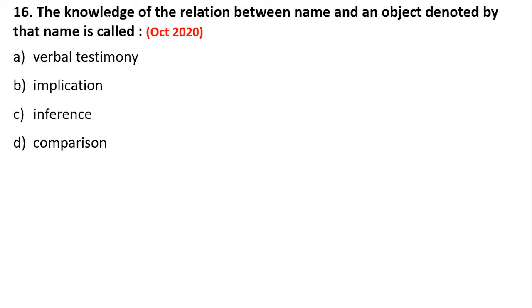The knowledge of the relation between an object name and the object denoted by that name is called verbal testimony, implication, inference, or comparison. Here, the knowledge about the relationship between the name of an object and the object itself — we call it comparison (upamana).